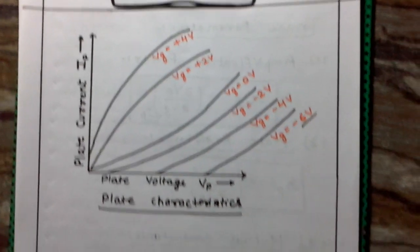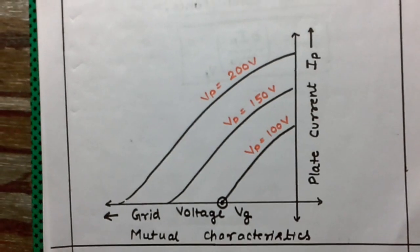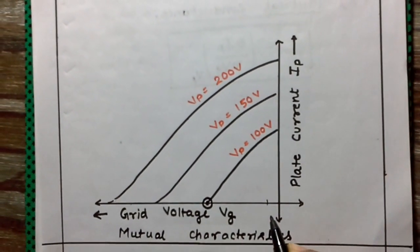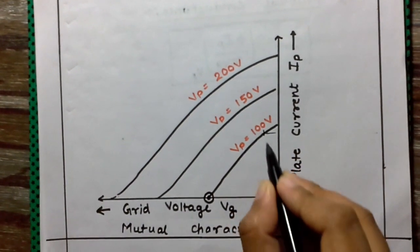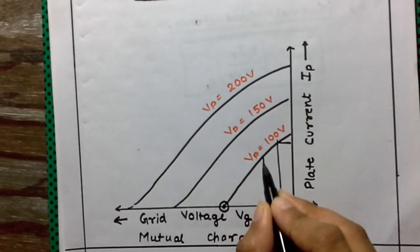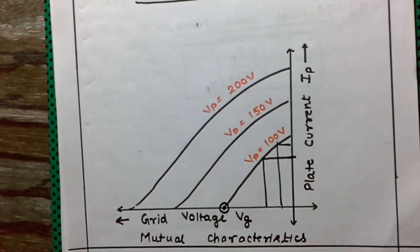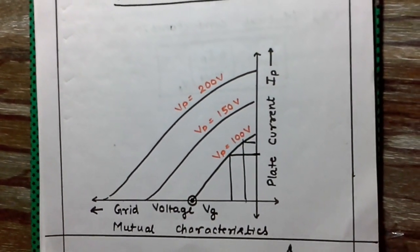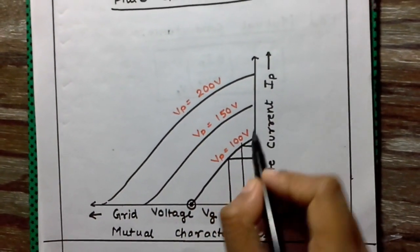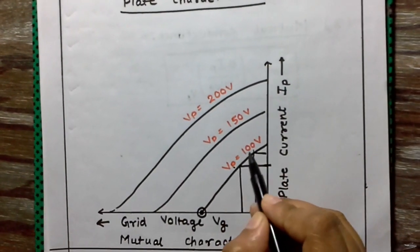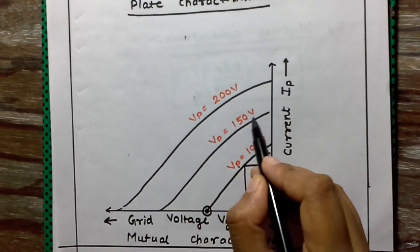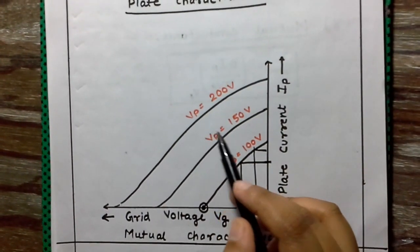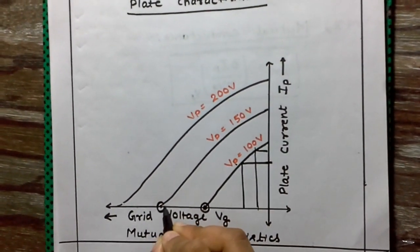In the second graph we have plotted grid voltage versus plate current. It is clearly visible that as the grid voltage becomes more negative, the plate current decreases, and at some value of the grid voltage the plate current becomes zero. This is known as the mutual characteristics. Different curves are plotted for different plate voltages: Vp = 100 V, Vp = 150 V, and Vp = 200 V. These curves show that as we increase the plate voltage, we require a more negative grid voltage to stop the plate current.